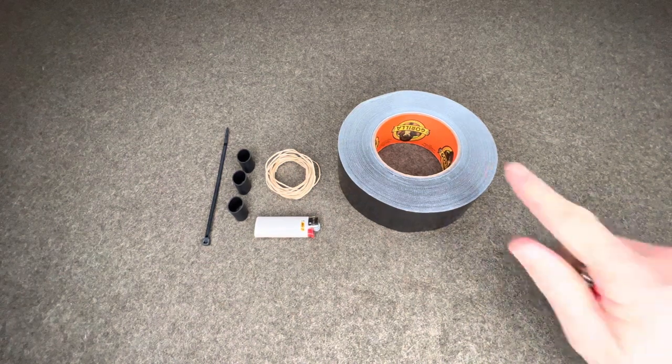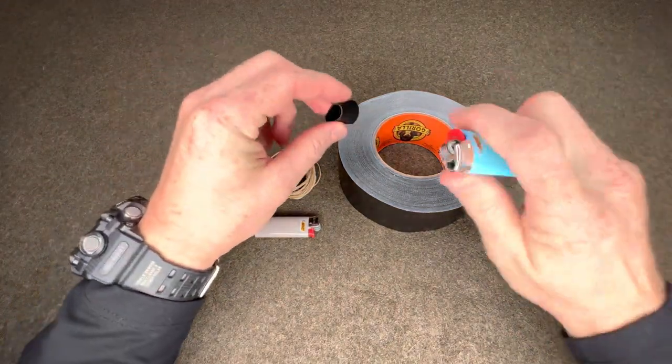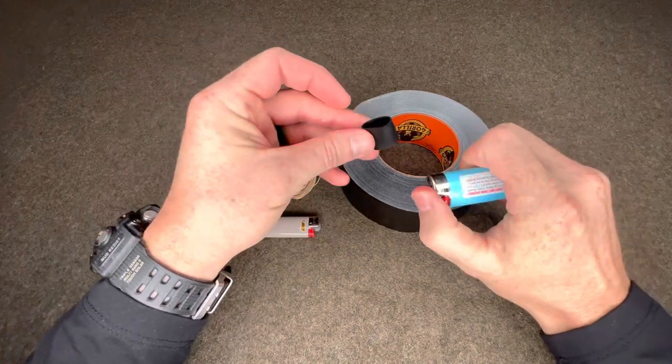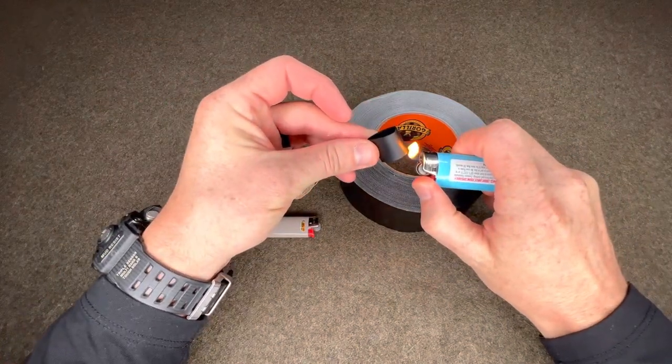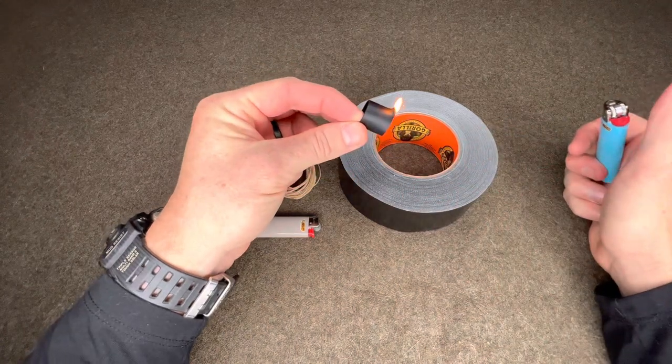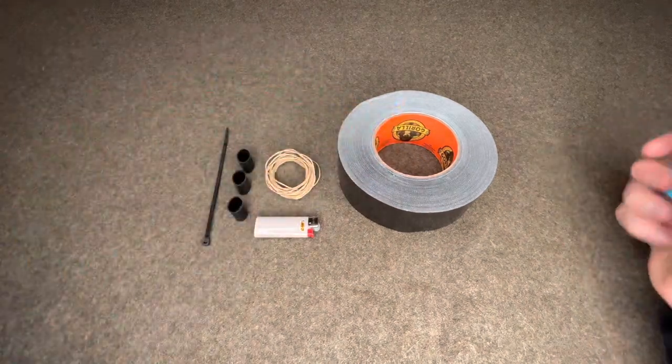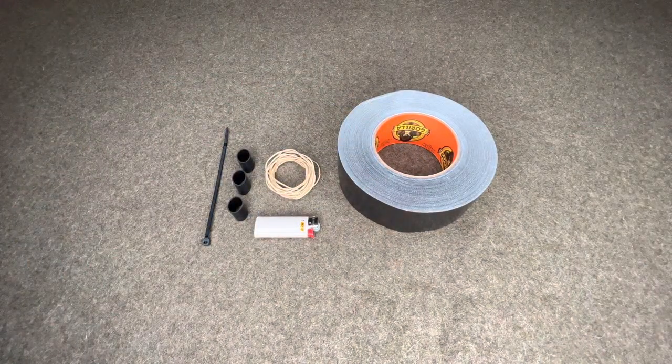All these components here are flammable and I will demonstrate. So this is a ranger band, this is a Bic lighter. I will include three of these on the mini Bic system, but you can light this which will work as a form of fire tinder. And once that gets going, it actually burns pretty hot.